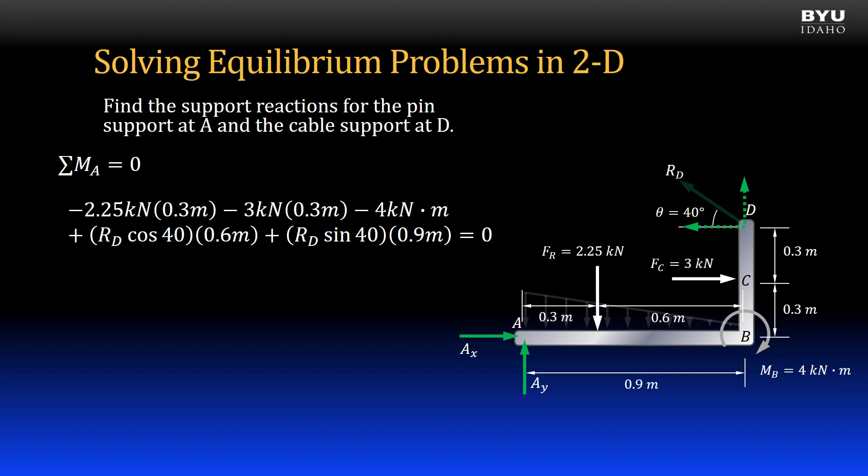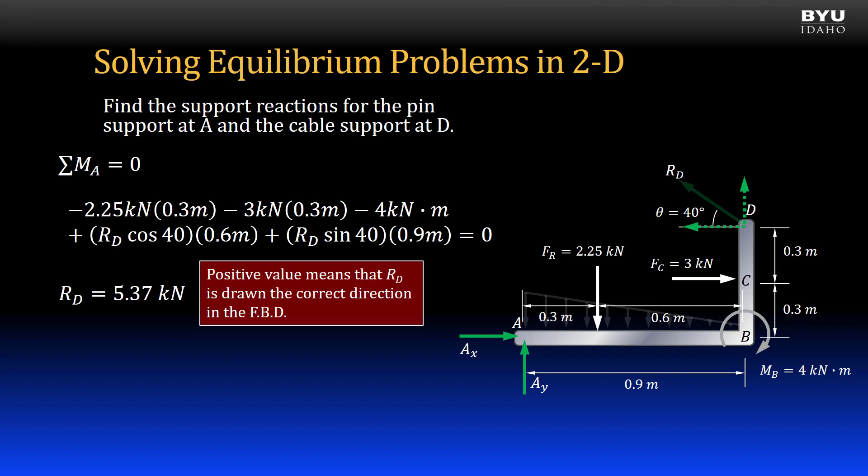I set it all equal to 0 and solve for the unknown, RD. It is positive 5.37 kN. Note that the positive sign on the value means that my RD arrow is drawn in the correct direction in my free body diagram.